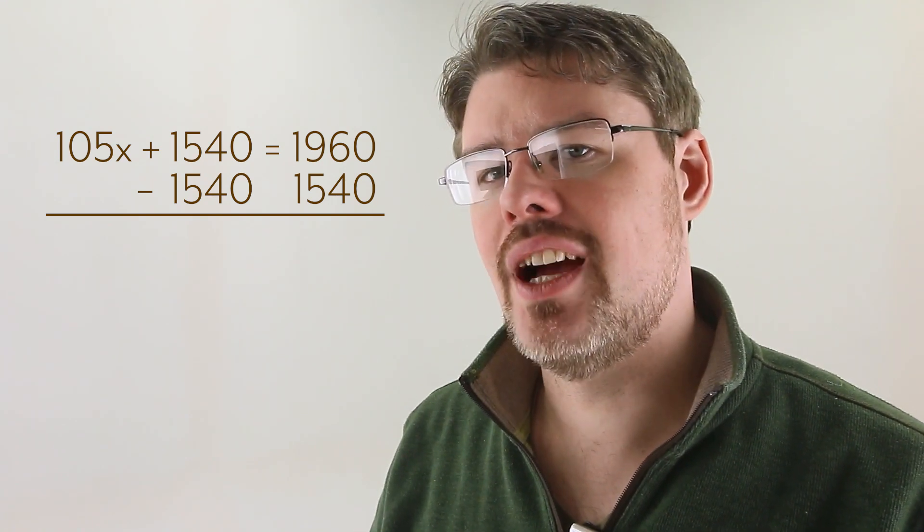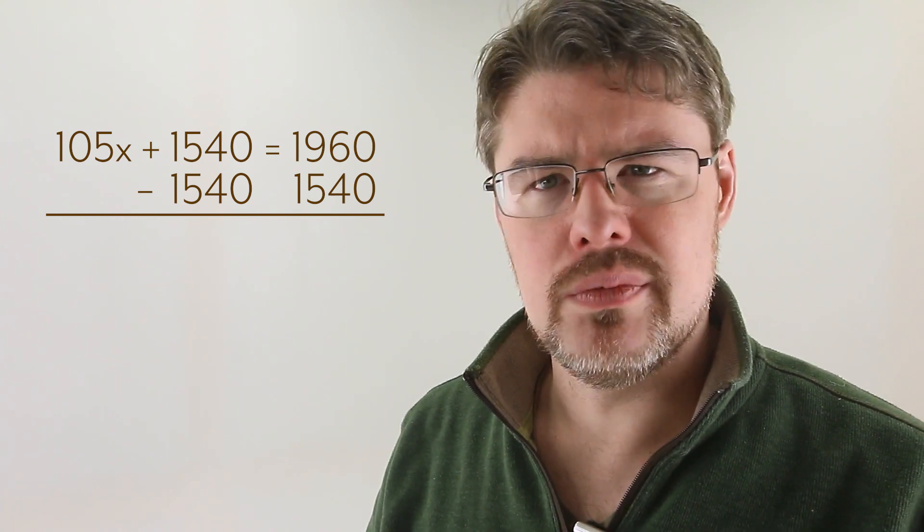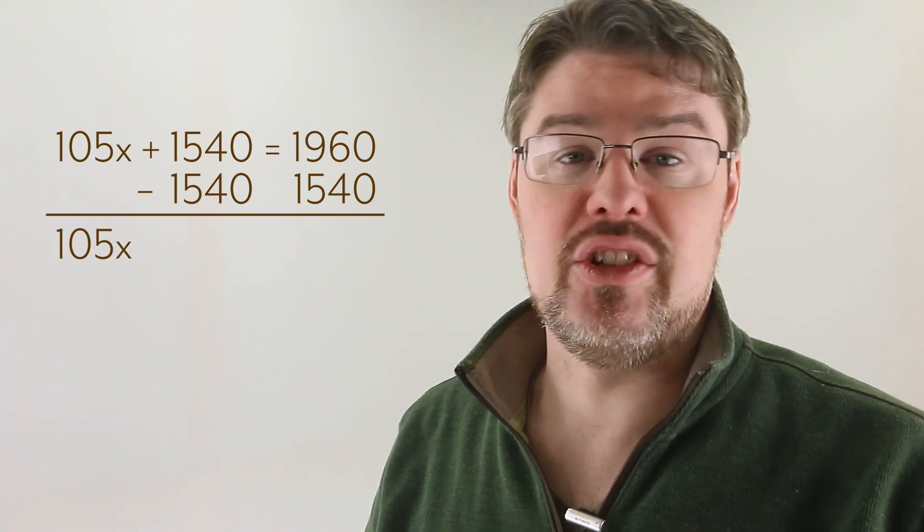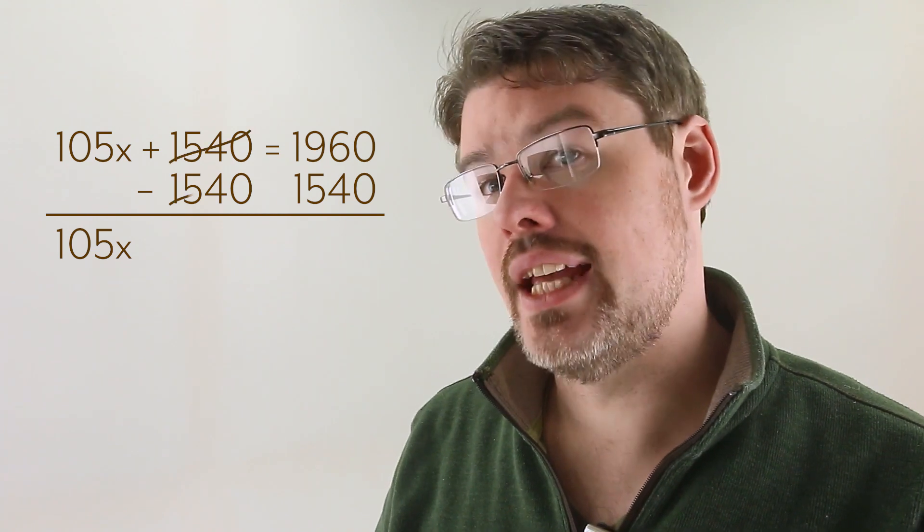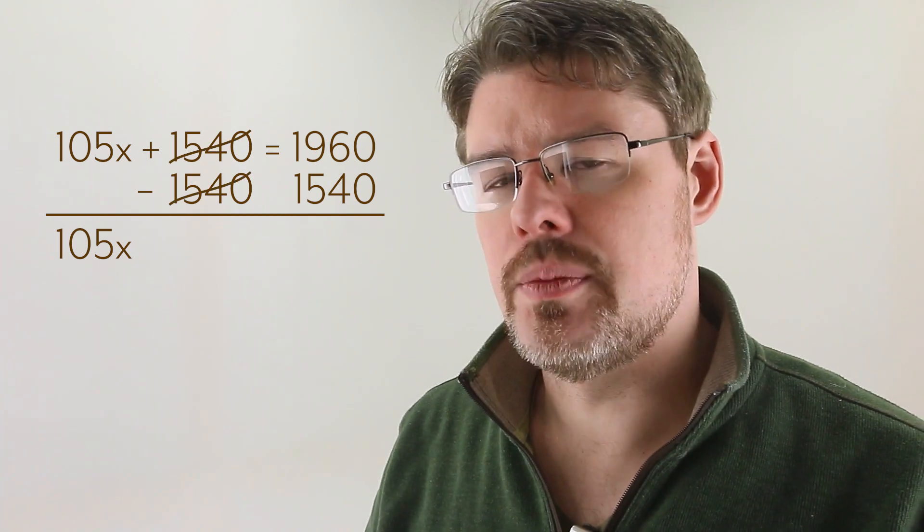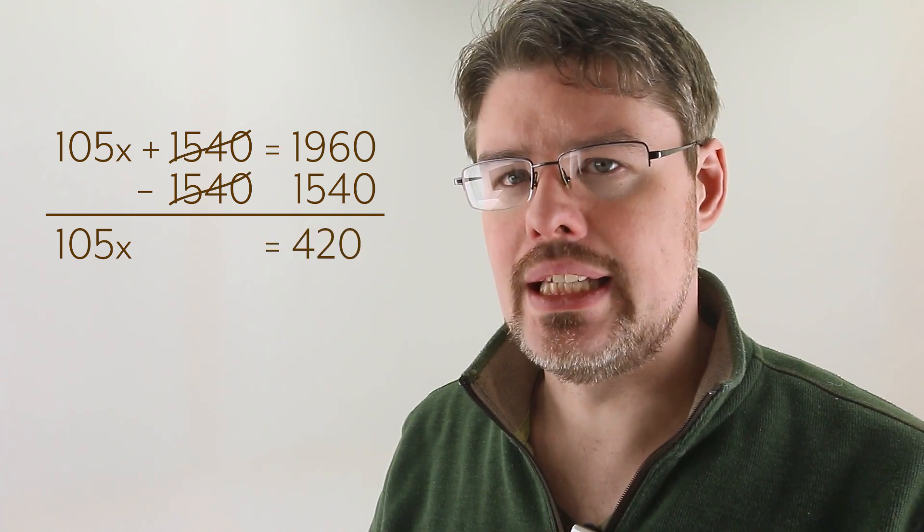When we finished this operation on the scales, we had 105 X's remaining in one pan. So let's just bring that down here in our little algebra world. These here cancel. And here, the subtraction gives us 420 like it did earlier.